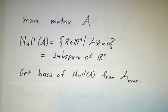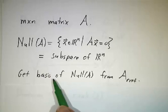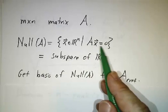And this is always a subspace of Rⁿ. And we worked out how to figure out a basis for this. You find all solutions to Ax equals zero, and you do that by row reduction.